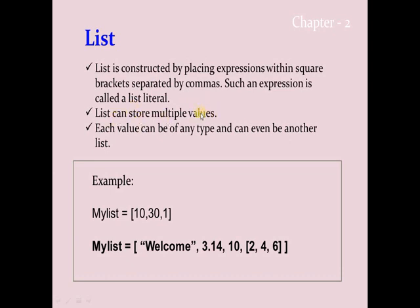More than one value can be stored in a list. A list can store any type of value — it can be a combination of integer, float, string, or even another list as a member. Unlike an array which is a collection of similar data types, a list can hold any type of data under one name.